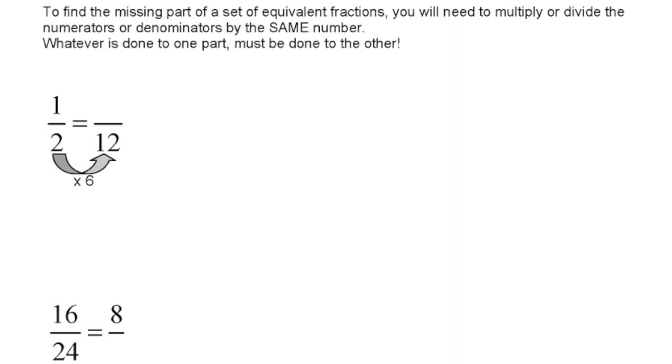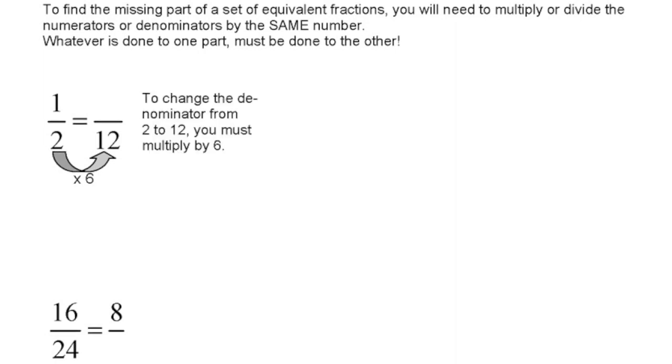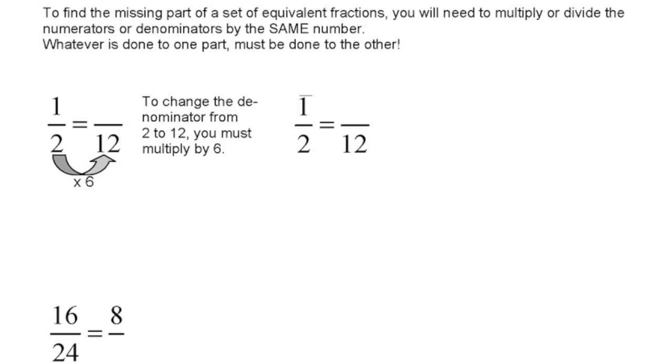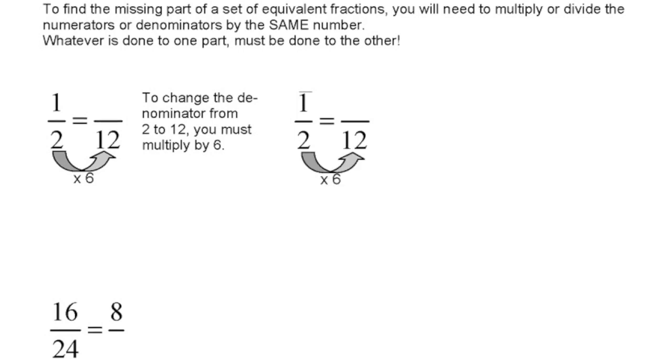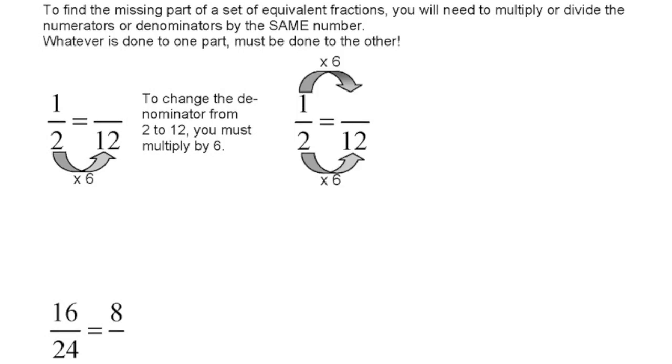So I have 1 half is equal to blank over 12. Now, to change the denominator from 2 to 12, you must multiply by 6. 2 times 6 is equal to 12. So what I'm going to do is whatever I do to the bottom, or whatever I do to one, I must do to the other. Since I did 2 times 12, or sorry, 2 times 6 is equal to 12, I must also do 1 times 6. So whatever I do to the bottom, I must do the top, and vice versa.